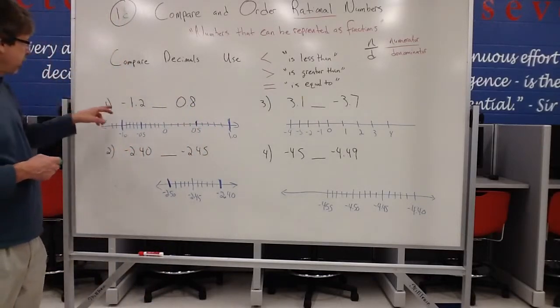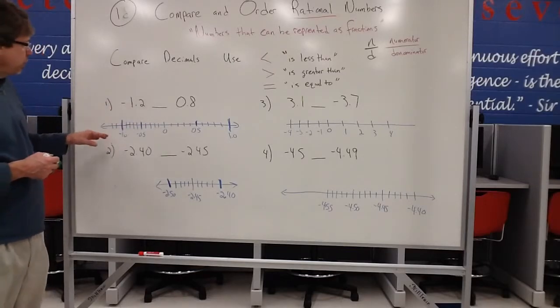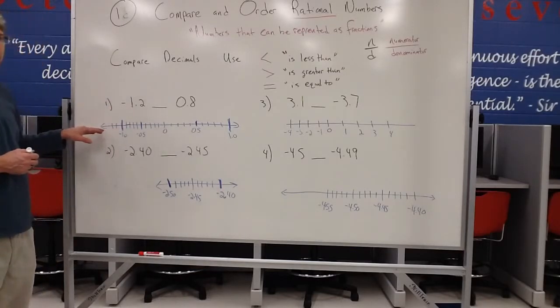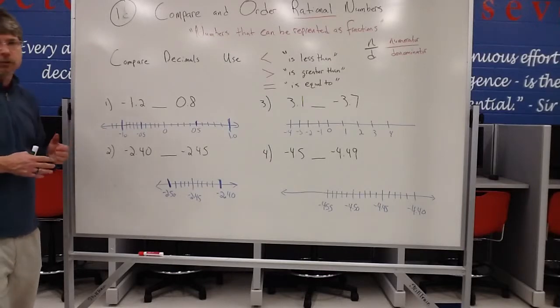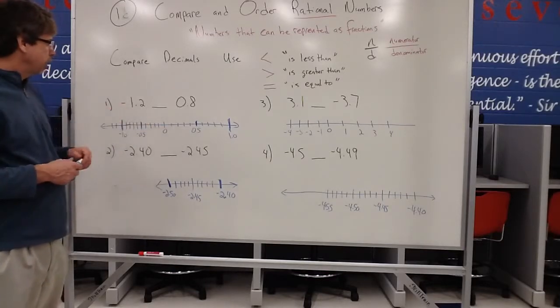So let's look at comparing negative 1.2 to 0.8. One of the best strategies you can use in comparing numbers, especially with decimals, is just put them on a number line. So negative 1.2 and 0.8.